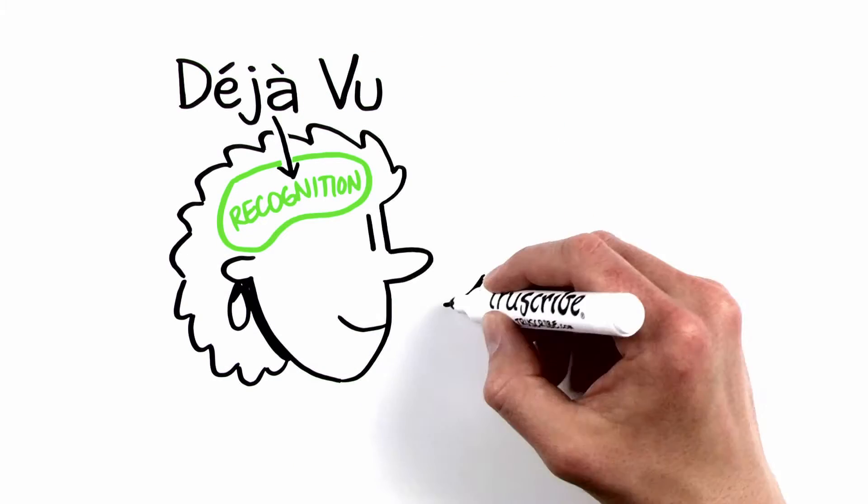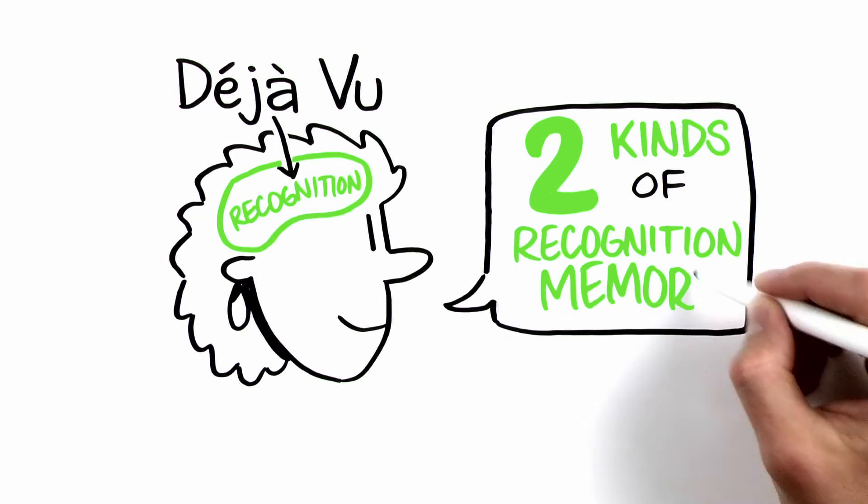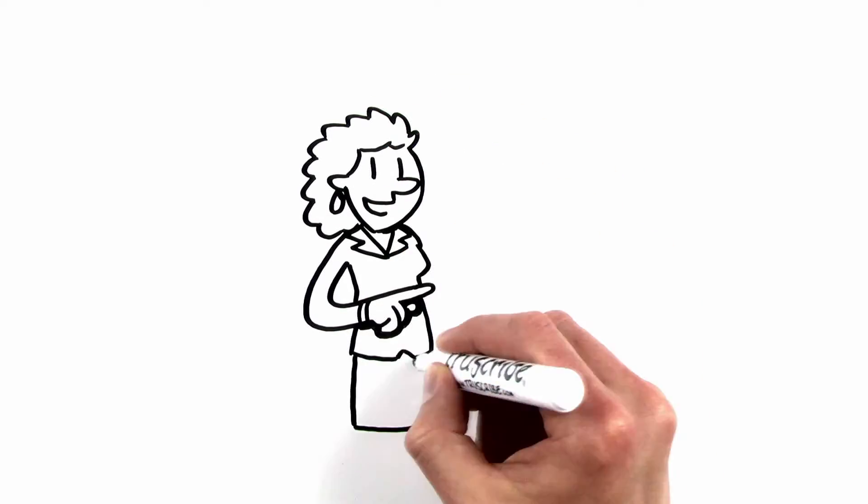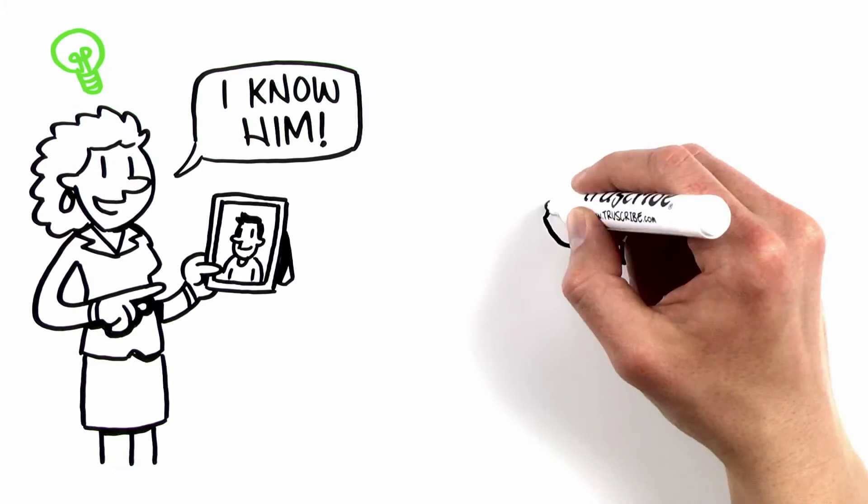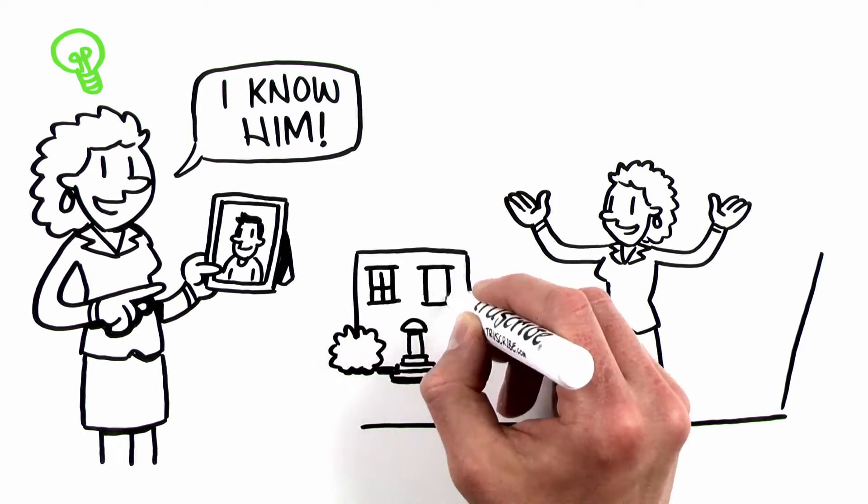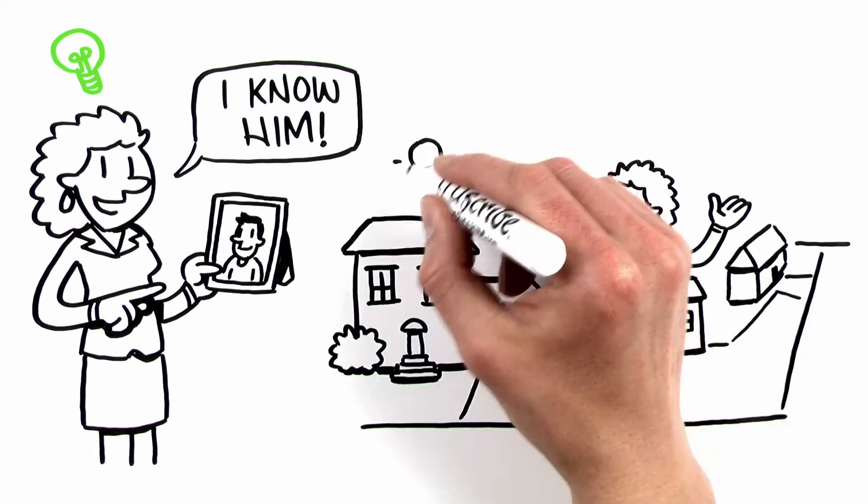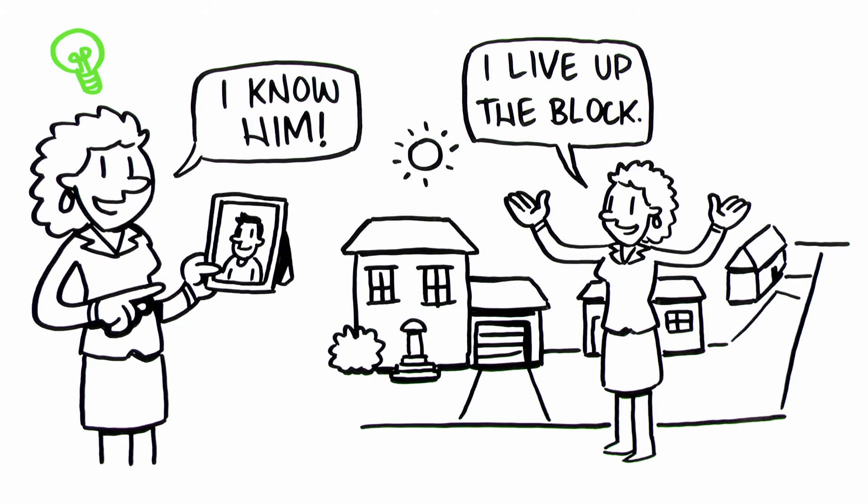There are two kinds of recognition memory. The first is recollection: when you see a picture of someone and you recognize it, or you find yourself on a street you've been on before and you recognize where you are. That's recollection. But here's another type of recognition memory.